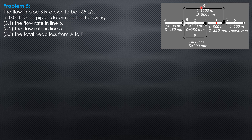Then knowing the head loss in pipe 4, we can compute the discharge in pipe 4. The discharge in line 6 therefore equals the discharge in line 4 plus 165 liters per second. Then the flow rate in line 5 has been determined already before the flow rate in line 6. The discharge in line 6 is also the discharge in line 1, so we can compute the head loss in line 1 and line 6. The total head loss is HF1 plus HF4 plus HF6. That's the plan.